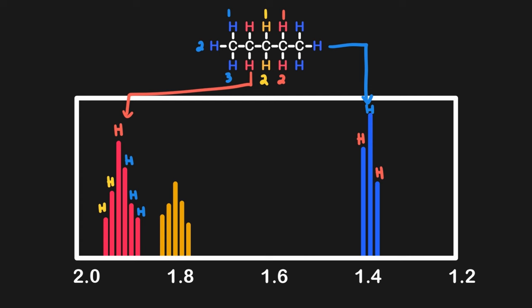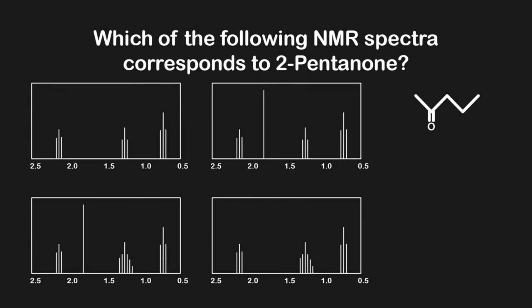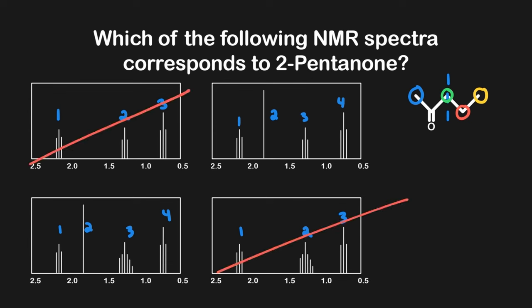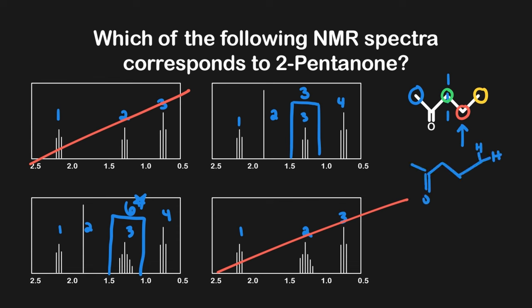Now let's put everything together to answer a question: which of the following NMR spectra corresponds to 2-pentanone? Looking at the answer choices, some have four signals and others have three. Since 2-pentanone is linear and not symmetrical, all hydrogens on different carbon atoms will be unique — there are four unique hydrogens, so we eliminate answer choices with only three signals. From there, we look at the splitting pattern. The hydrogen group with the most adjacent hydrogens has five neighboring hydrogens, so we should see six splits for the largest splitting pattern. Therefore, the answer displaying six splits is correct.